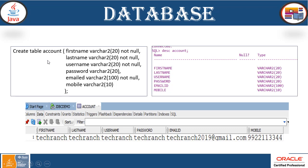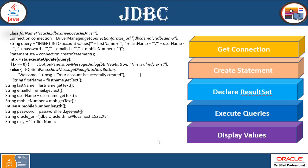Here we are going to use the table name 'account' with the parameters: first name, last name, username, password, email ID, and mobile number. All these values we are going to prepare at the back end in the database. You see the table will be created like this. Once the create table is done, you have to insert the values. This is already inserted. Now that we can do it with the help of the JDBC connection.